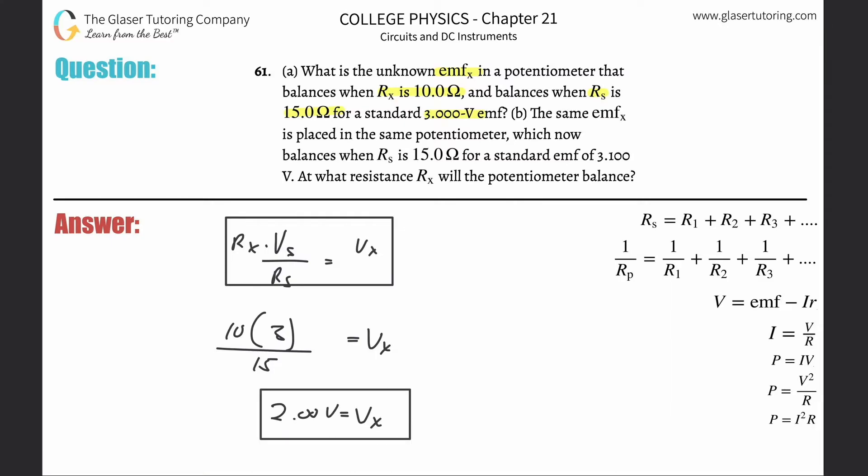Letter b: The same emf x is placed in the same potentiometer, which now balances when R sub s is 15, standard cell is 3.1, and what resistance R sub x?